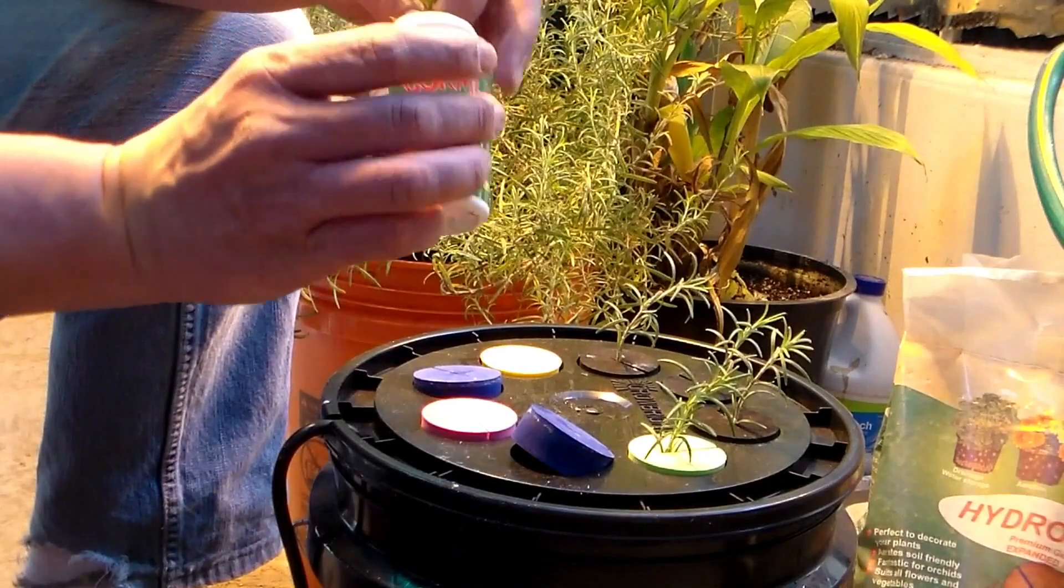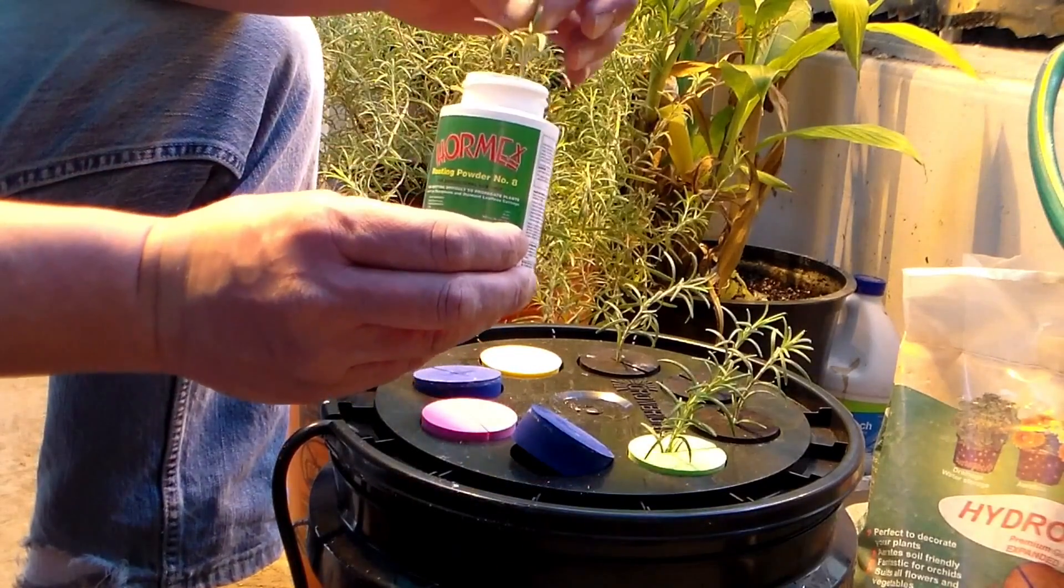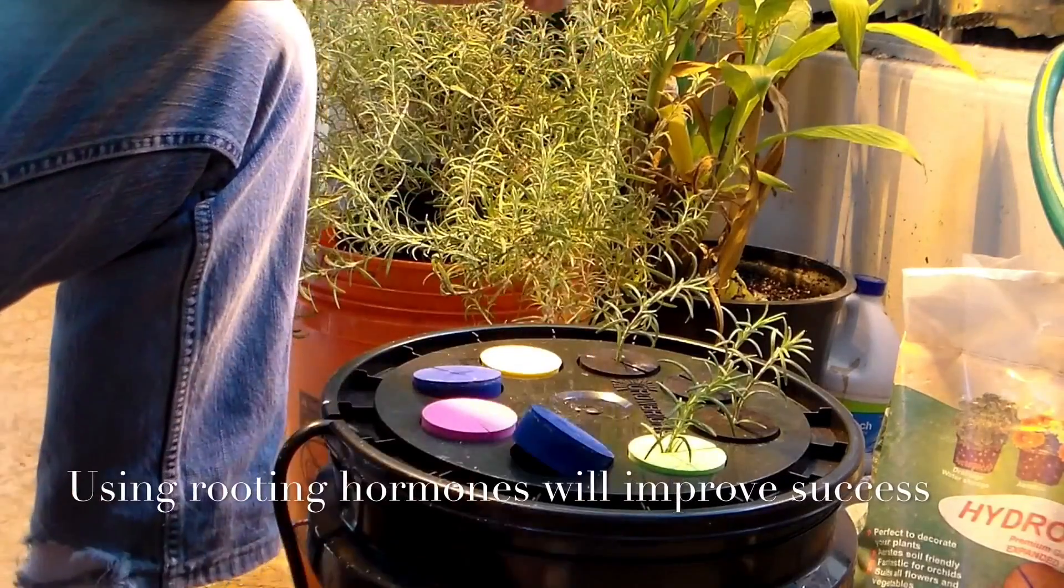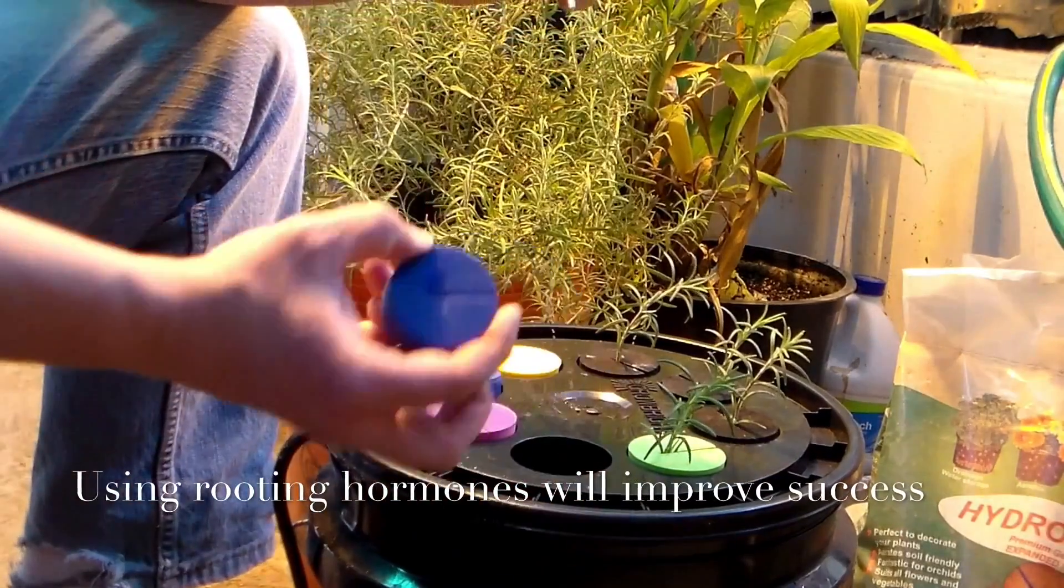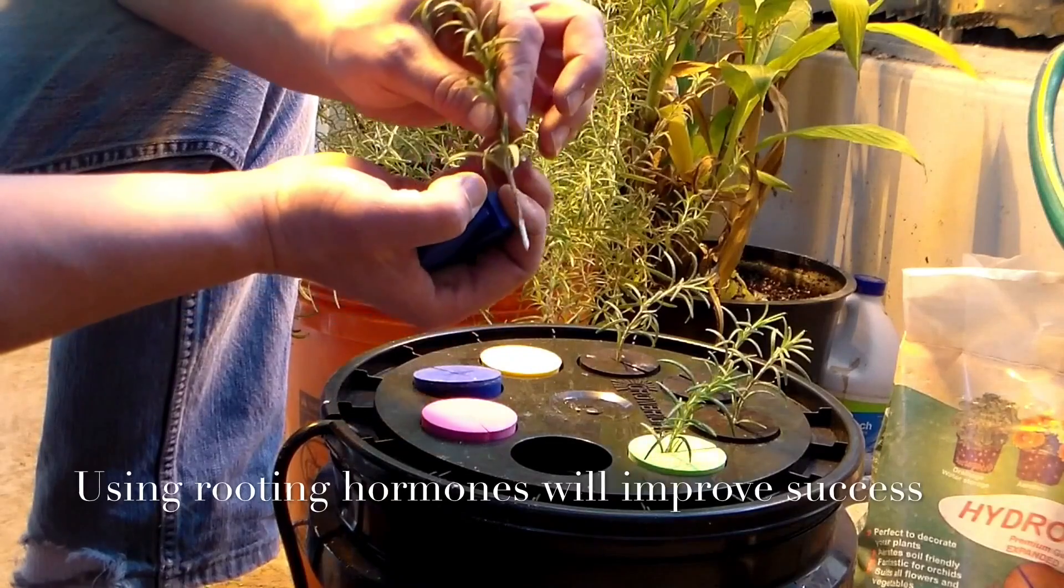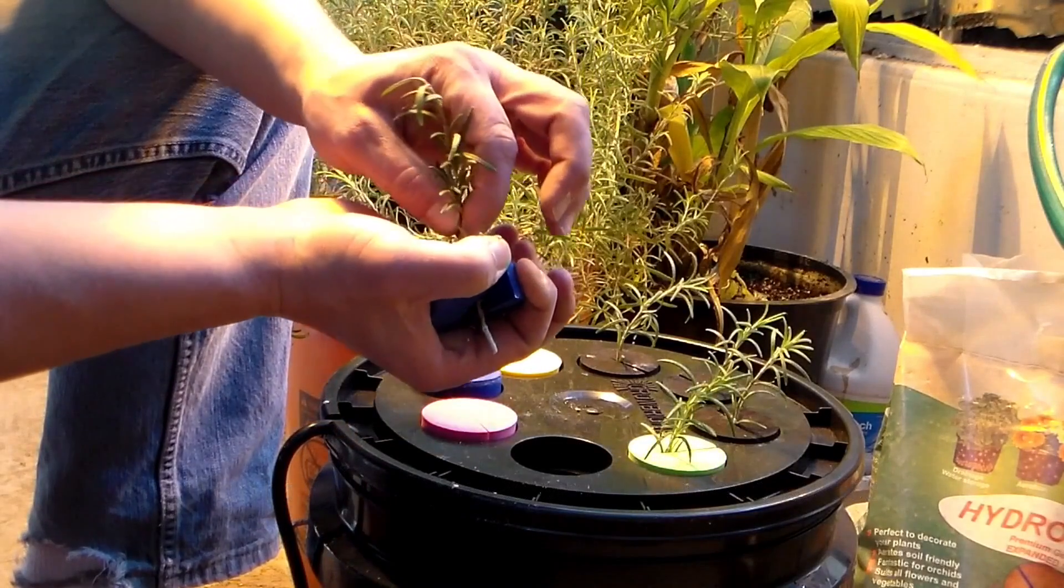So you then make sure you dip this into your rooting compound. I'm using Hormex here and you then open up your starter plug. Put the branch into it like that.